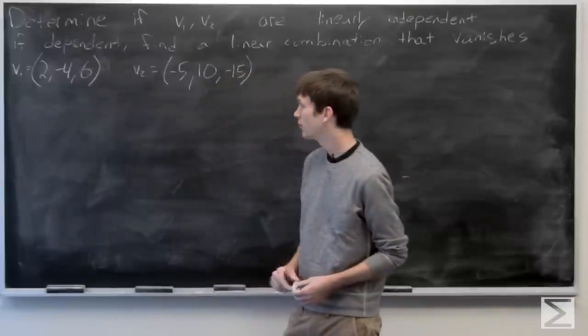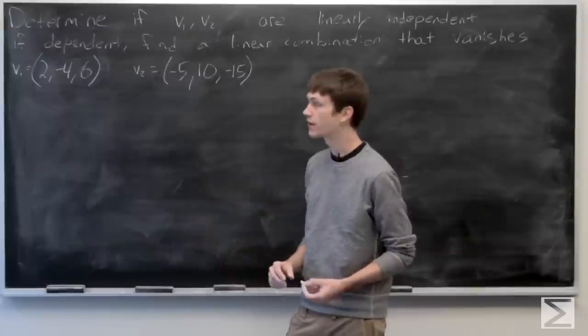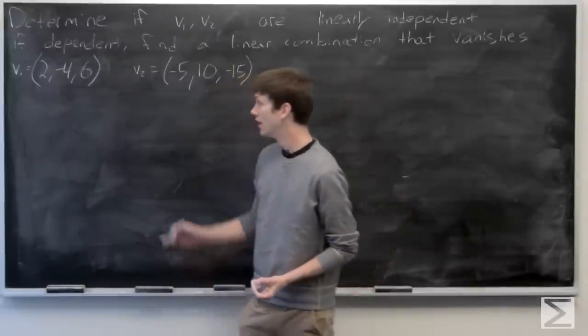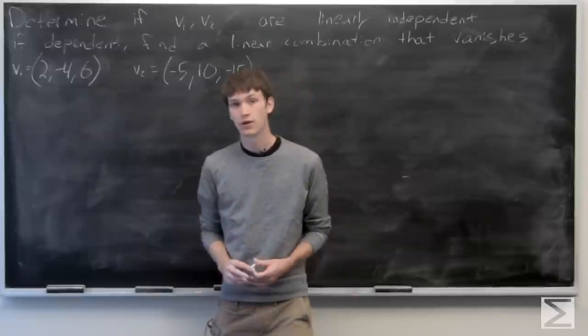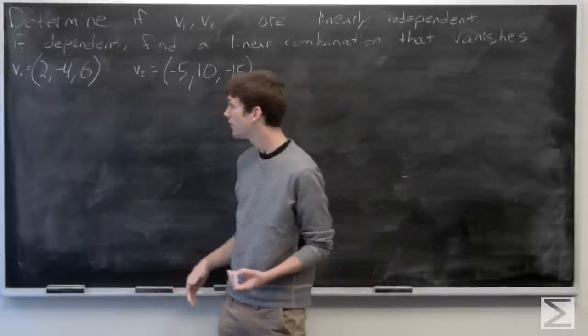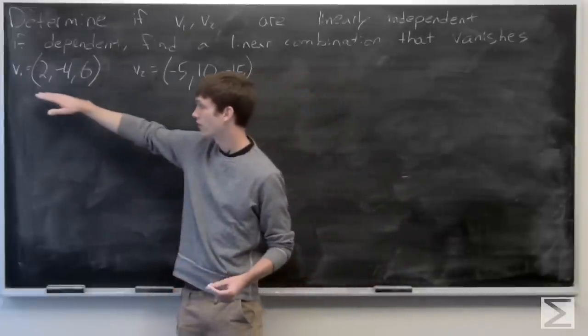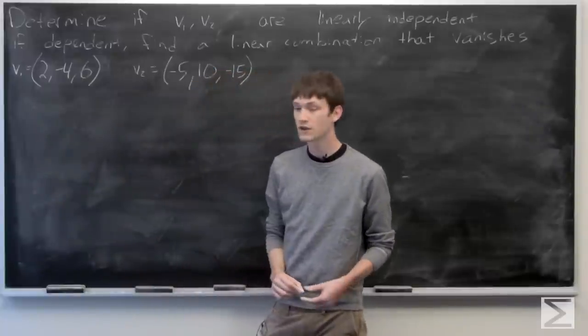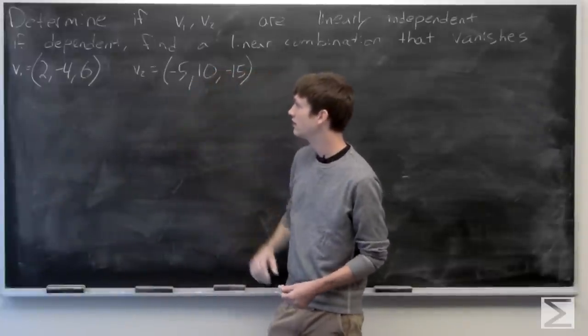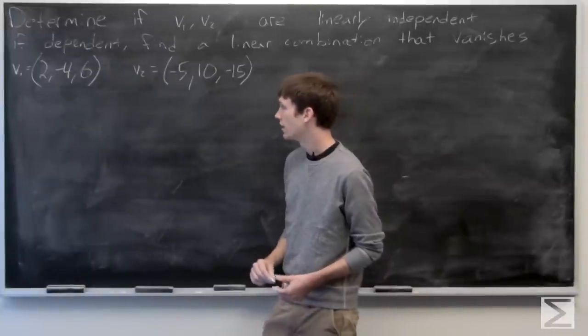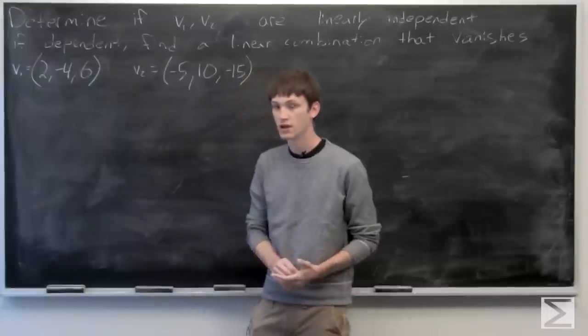In this problem we're asked to determine if vectors v1 and v2 are linearly independent, and if they're dependent, to find a linear combination such that they vanish. We're given that v1 is (2, -4, 6) and v2 is (-5, 10, -15). We want to see if they're linearly independent.